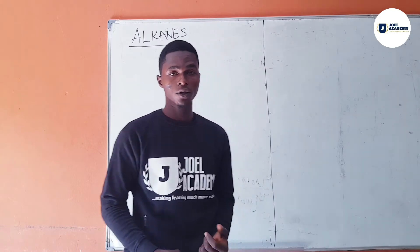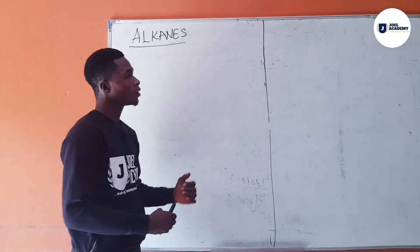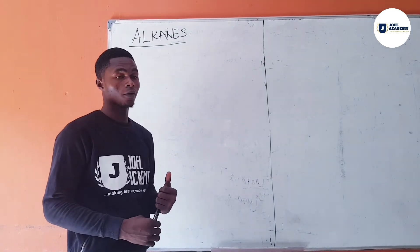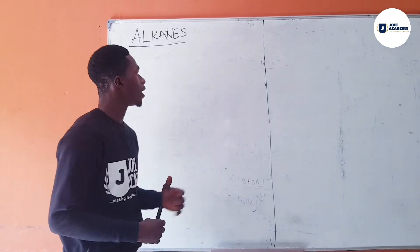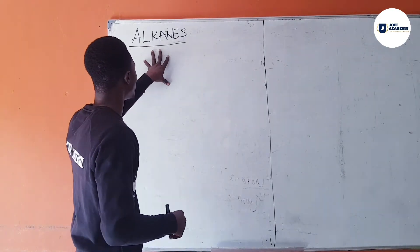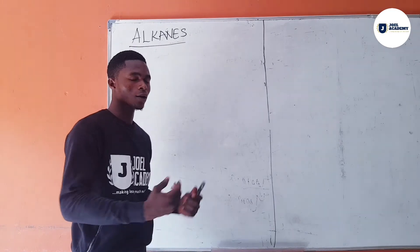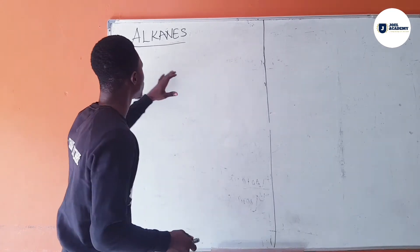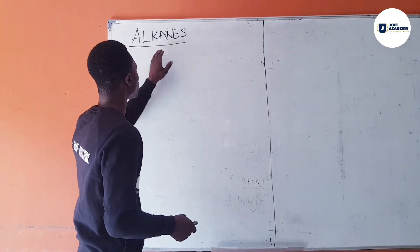When we talk about the alkanes, this is a hydrocarbon made up of carbon and hydrogen and it has no double bond and it is straight. We can have a cycle of alkanes also but basically today we will be talking about the straight chain alkanes.